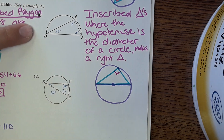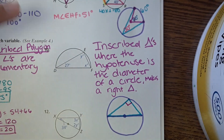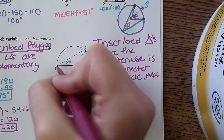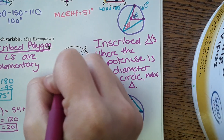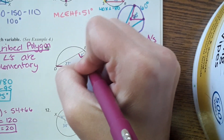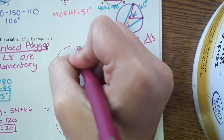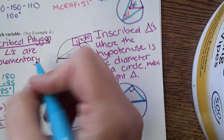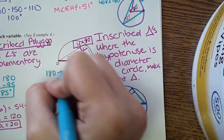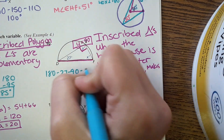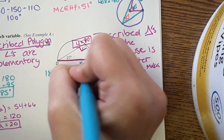Number ten: we have a semicircle, so the hypotenuse is the diameter, making it a right triangle. Therefore y equals 90°. To solve for x: 180 minus 27 minus 90 equals 63, so x equals 63 degrees.